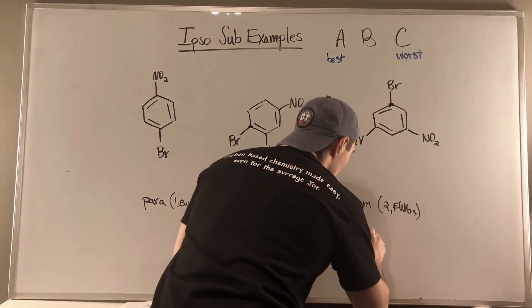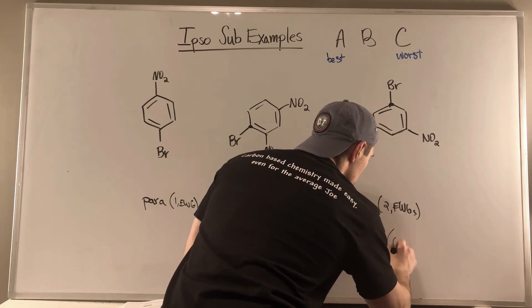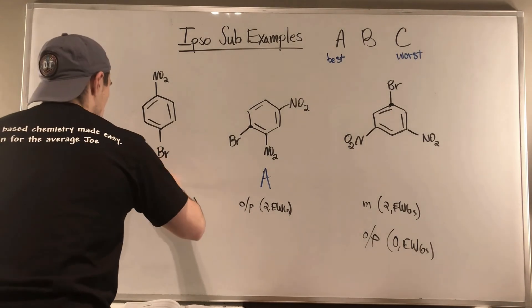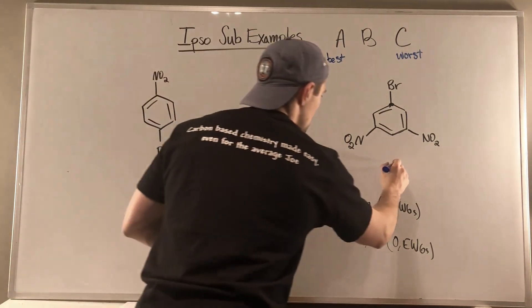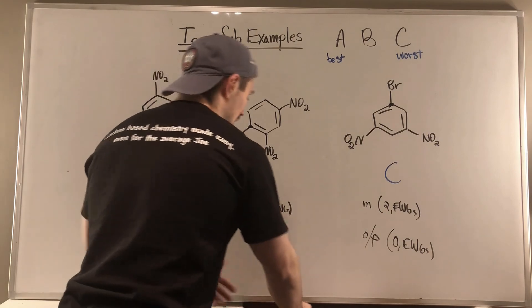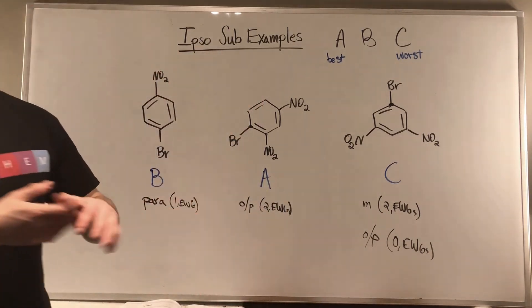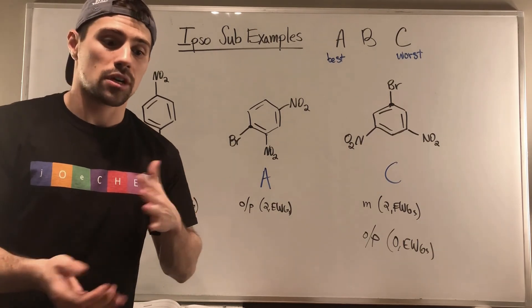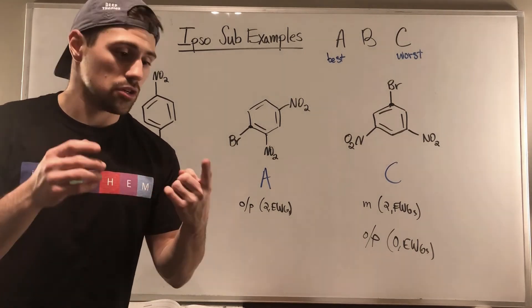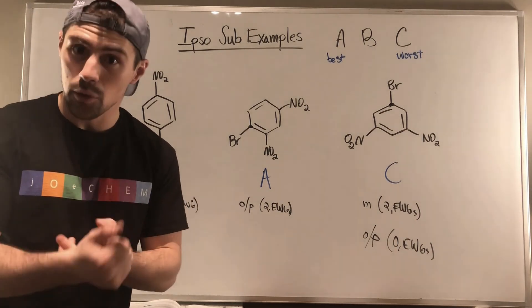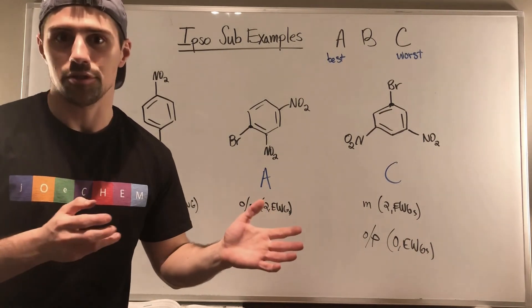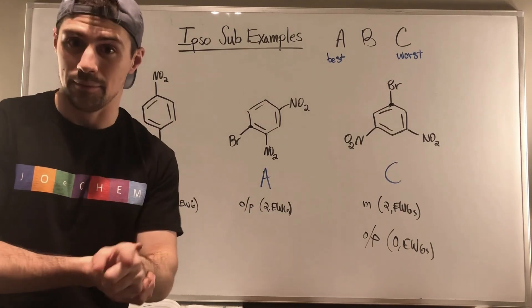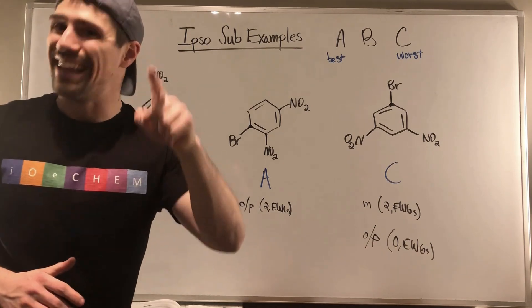The meta positioned electron withdrawing groups don't help us out at all. In fact, because we have one EWG here in ortho-para and zero here - we have zero ortho-para, zero EWGs - we're going to have our B over here. This is second best because this one has two and this has C. This is just a nice little further extension of our introduction to ipso substitutions. We're going to see how ipso substitution plays into creating phenols and a whole bunch of other chemistry. This is just truly the beginning. I'll see you all in the next video.